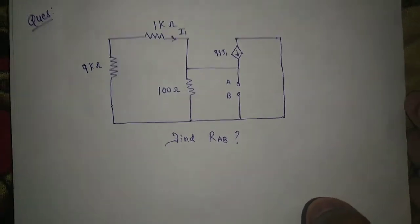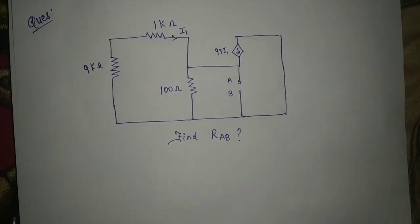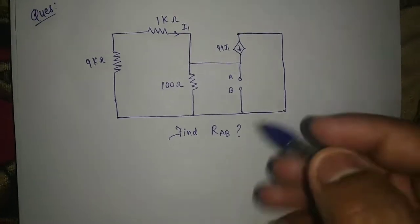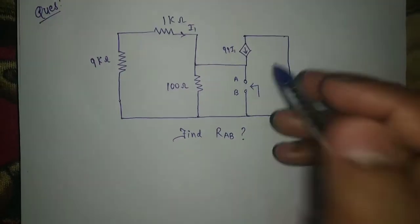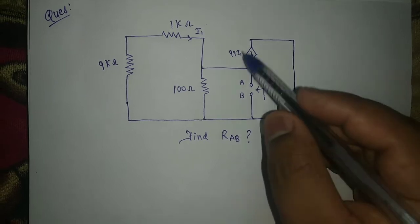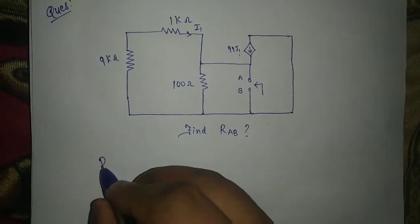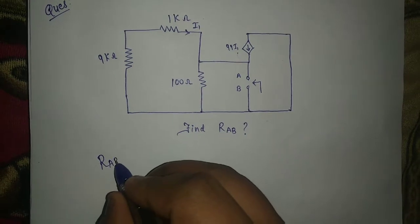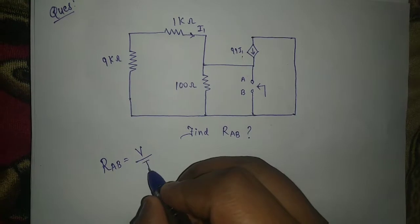Hi friends, welcome back. For the given circuit we have to find resistance across AB. In this circuit only a dependent source is there, so whenever only a dependent source is there we have to evaluate resistance by method V by I.